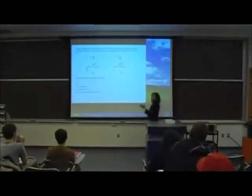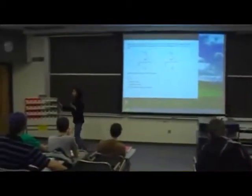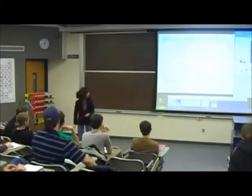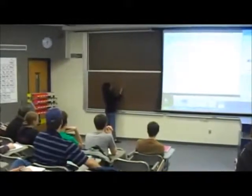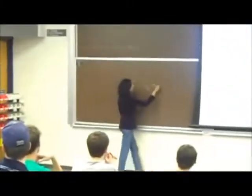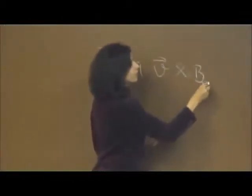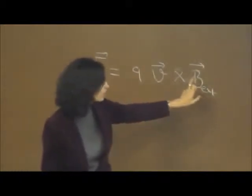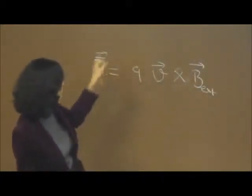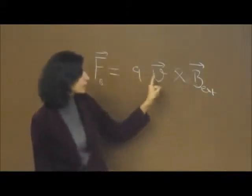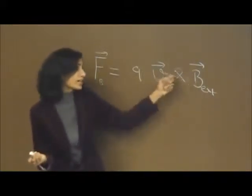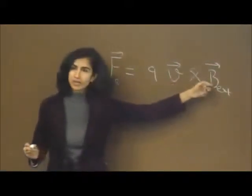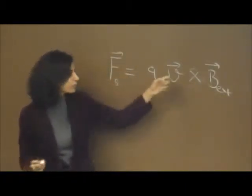The correct answer is neither of them. The reason is that the magnetic force is always perpendicular to both the velocity of the charged particle and the magnetic field - it's V cross B. You cannot have V at 45 degrees with respect to the force. V must be perpendicular to the force, and B must be perpendicular to the force.